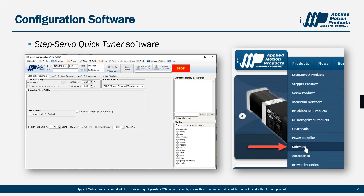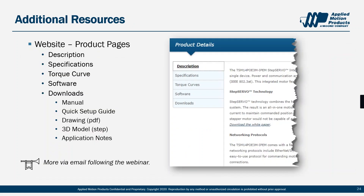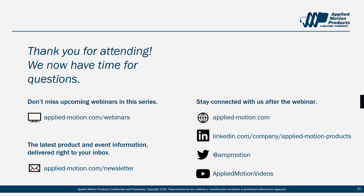Configuration of the TSM-14 is done using the Step Servo Quick Tuner software, which is the same software used for all step servo integrated motors and drives. You can download it for free from our website under the products menu by clicking on software. Additional resources — specifications, torque curves, manuals, quick setup guides, drawings, and application notes — are available on the product pages. I'll include more resources in the follow-up email after the webinar. Thank you everyone for attending; we can now open it up for questions.